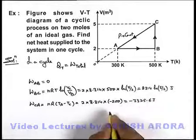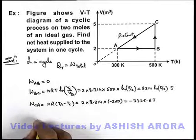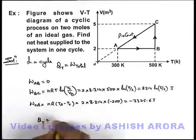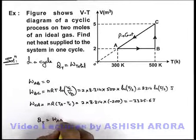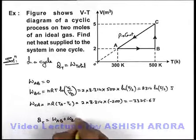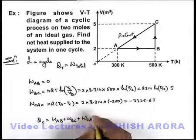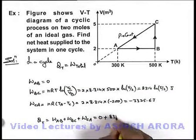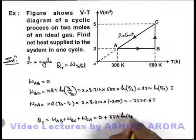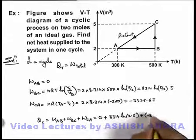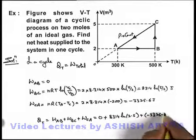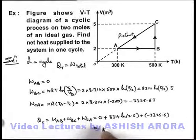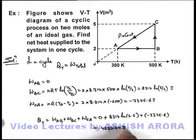So now the total heat supplied can be written as total work done, which is Wab plus Wbc plus Wca. On substituting the three values: Wab zero, plus 8314 ln of 2.5, plus minus 3325.6. On simplifying, the final result will be 4292.44 joules. This will be the answer to our problem.